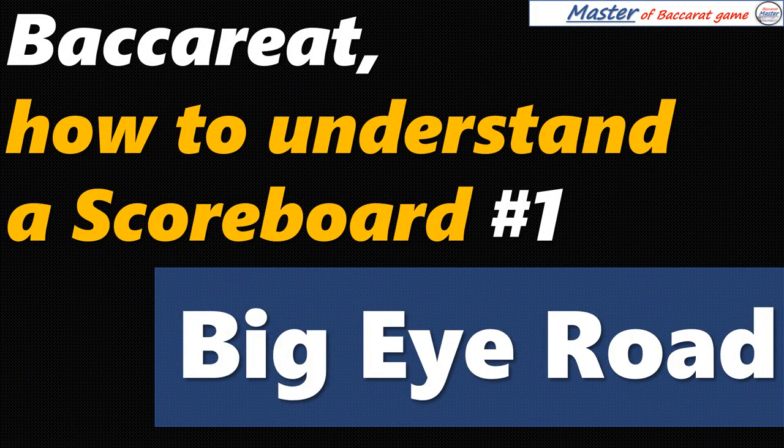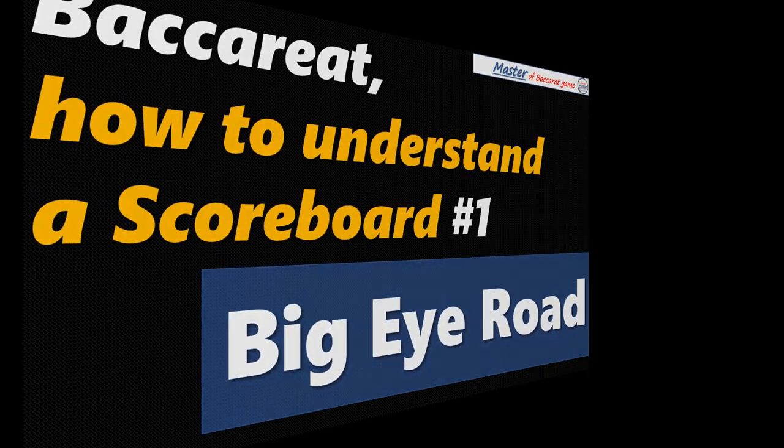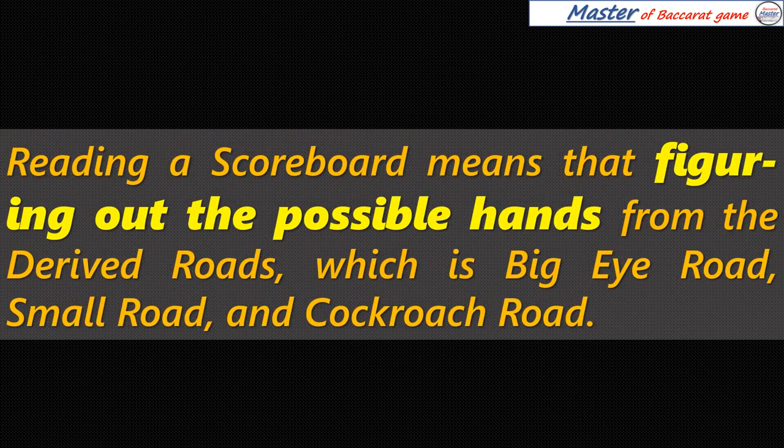Baccarat: how to understand a scoreboard, number one — the Big Eye Road. Reading a scoreboard means figuring out the possible hands from the derived roads, which are the Big Eye Road, Small Road, and Cockroach Road.